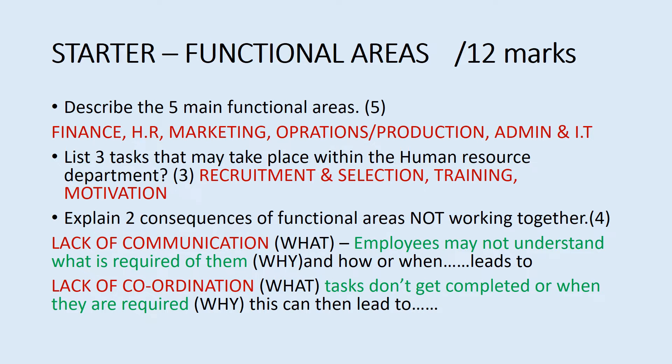As we go through the course, you'll learn how to answer those questions. For this instance, it's two marks for each point — you say what the consequence is and why it matters to the business. For example, lack of coordination means employees don't understand what's required of them. Tasks aren't explained properly, so things don't get done, or don't get done on time. Make sure you've got two parts to your answer.